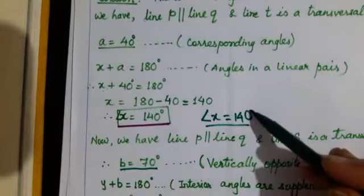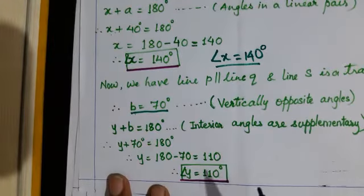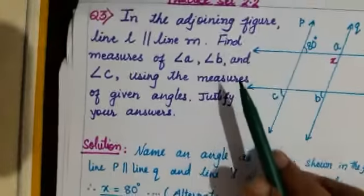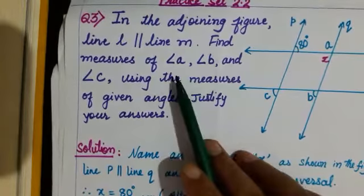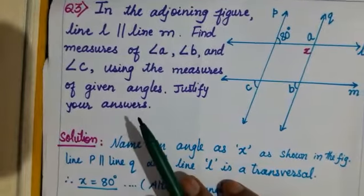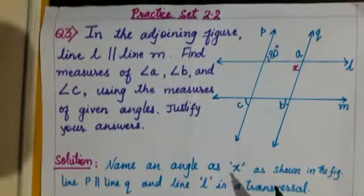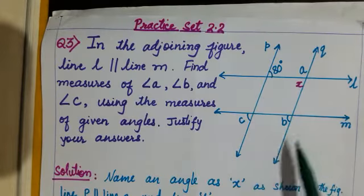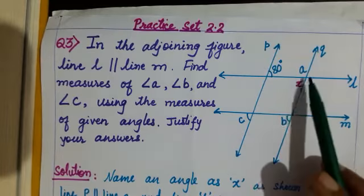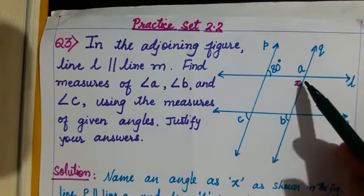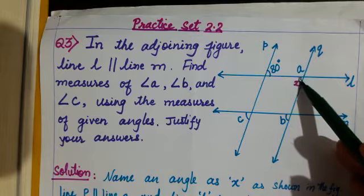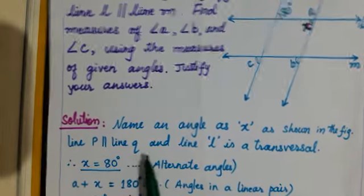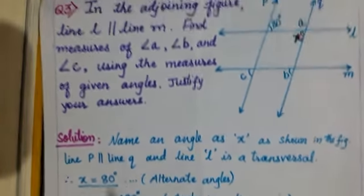We got angle x as 140° and angle y as 110°. Now question 3: in the adjoining figure, lines l and m are parallel. Find the measure of angles a, b, and c using the given angle measures and justify the answer. Lines l and m are parallel, lines p and q are transversals. We name an unknown angle as x, as shown in the figure.